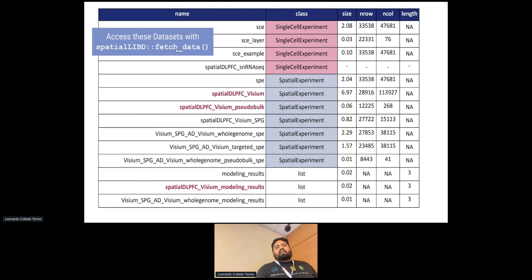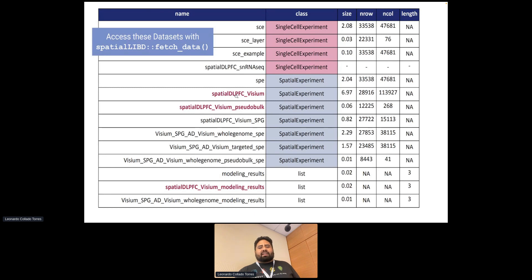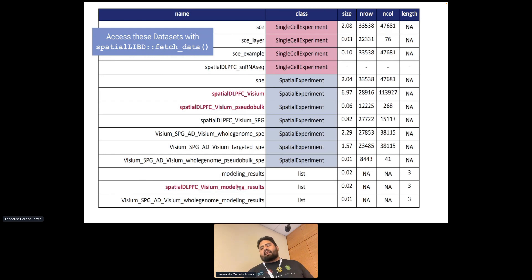The fetch_data function was initially developed around our pilot data. Back then SpatialExperiment didn't exist, so we had a hacked version of SingleCellExperiment where we used the metadata slot to store images. Now with SpatialExperiment it's a lot more standardized. We can share data for a few different projects — the spatialDLPFC, the Visium SPG Alzheimer's disease project — sharing both the full spatial object and pseudobulk data, modeling results, and differentially expressed genes used for gene set enrichment.